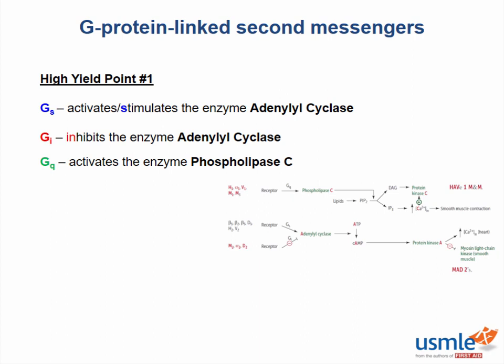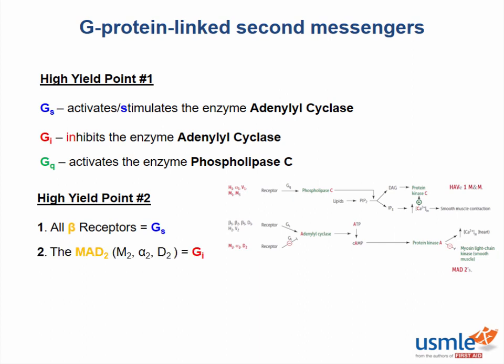Now, there are many different tricks to remember which receptors are coupled to which G proteins. The one I like best has three rules. Rule number one is that all beta receptors are Gs. Rule number two is called the MAG2 — so all M2, alpha2, and D2 receptors are Gi. And rule number three is that all M3 receptors and most sub-1 receptors are Gq.